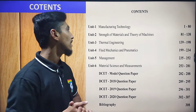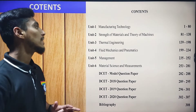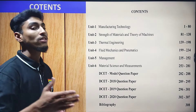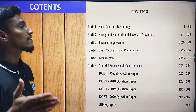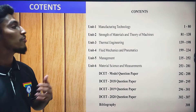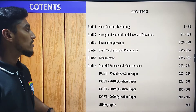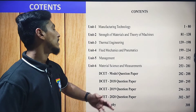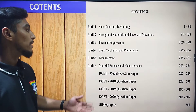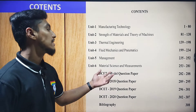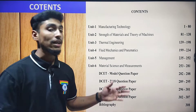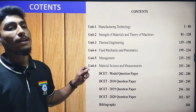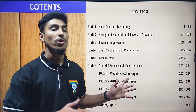The contents of the book include: Manufacturing Technology, Strength of Materials and Theory of Mechanics, Thermal Energy, Fluid Mechanics and Management, Material Science and Measurements. Also including Model Question Papers and Bibliography.